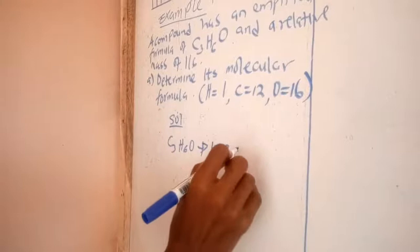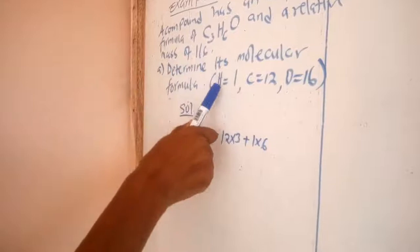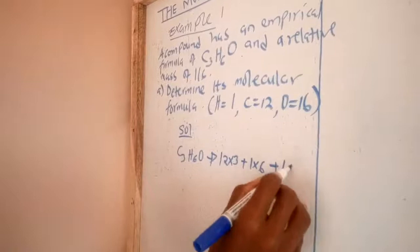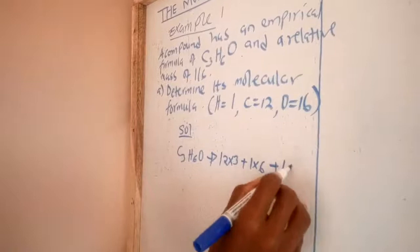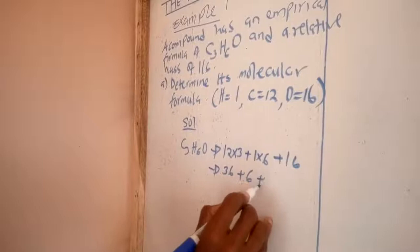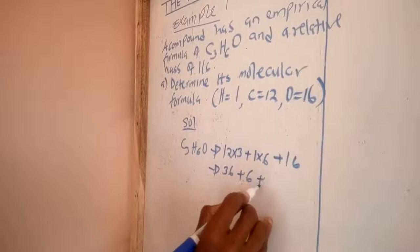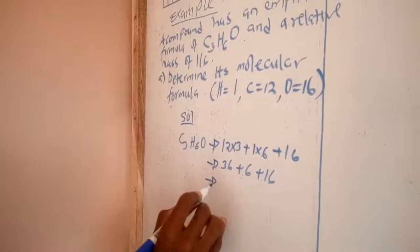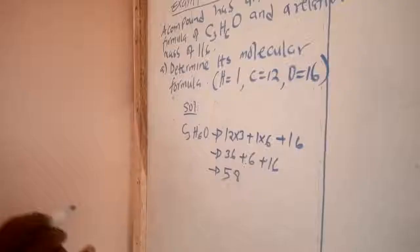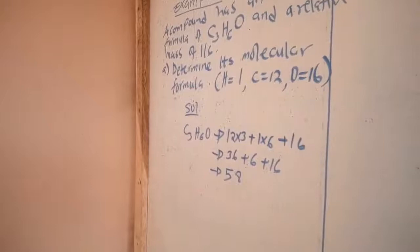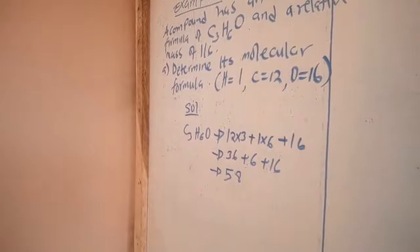Then you add hydrogen: the relative atomic mass of hydrogen is 1, and because there are 6 atoms, you multiply by 6. Finally, you add 16, which is the relative atomic mass of oxygen. So you get 36 (from carbon) plus 6 (from hydrogen) plus 16 (from oxygen). After calculation, the empirical mass of this compound is 58.